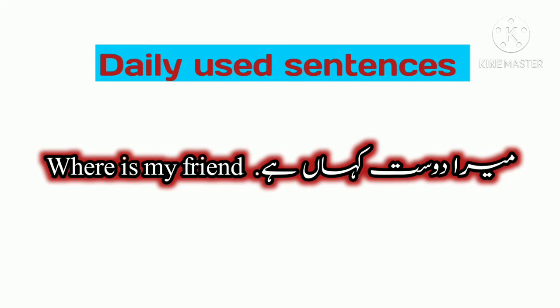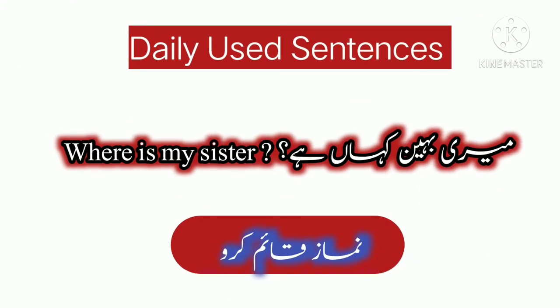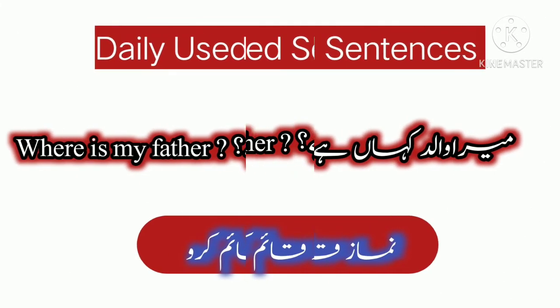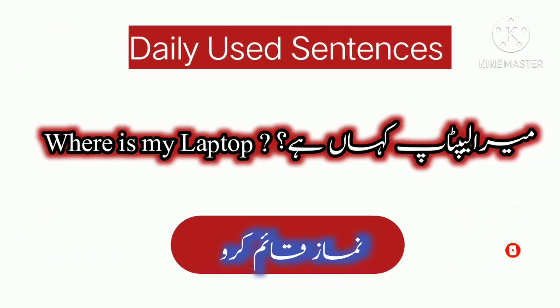'Mera dost kahan hai?' — Where is my friend? Dost ko 'friend' kehte hain. Agar hum is sentence ko bhai ke liye istemal karna chahein: 'Mera bhai kahan hai?' — Where is my brother? 'Meri behen kahan hai?' — Where is my sister? 'Mera baap kahan hai?' — Where is my father? 'Mera teacher kahan hai?' — Where is my teacher? 'Mera laptop kahan hai?' — Where is my laptop?